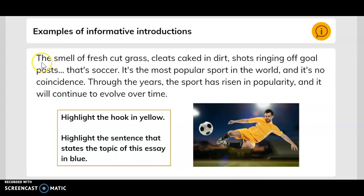Highlight the hook in yellow and highlight the sentence that states the topic of this essay in blue. So the first sentence - that's what we could highlight in yellow because we're hooking in our readers, giving them an imagination of what it is to be out there on a soccer field. And then where it states the topic of the essay is saying that right here: the most popular sport in the world is soccer. And then it gives us information about it being popular and how it will continue to evolve over time.